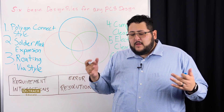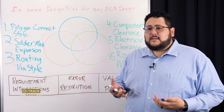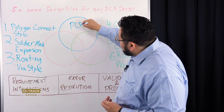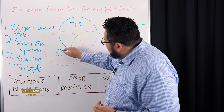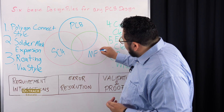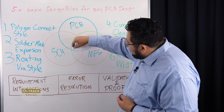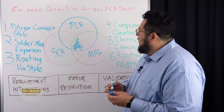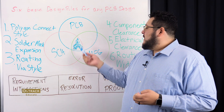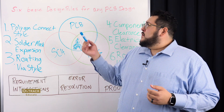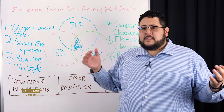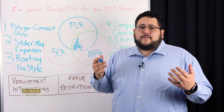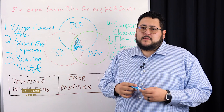Let's look at some of the ways design rules are brought into a system. You can get rules from the PCB side, from the schematic side, and from manufacturing. What's important is to get everything filled in and actually create rules that will help you cover all of these areas. We're going to talk about six rules that, if you incorporate into all of your designs, you're off to a pretty good start and you'll be able to get something manufactured.